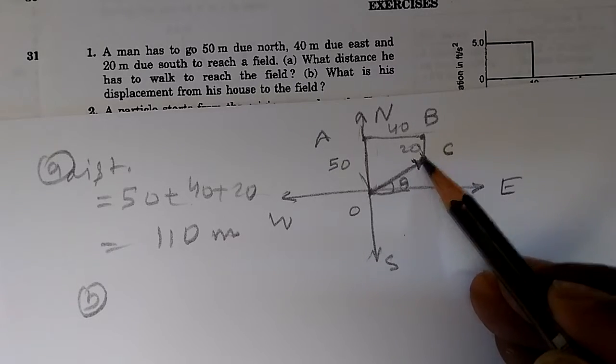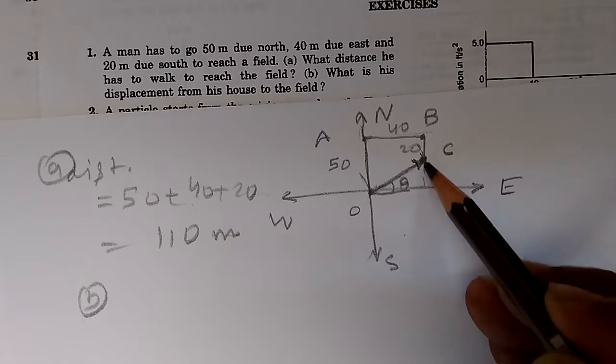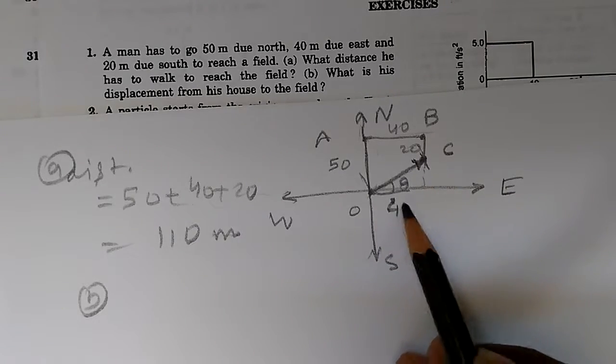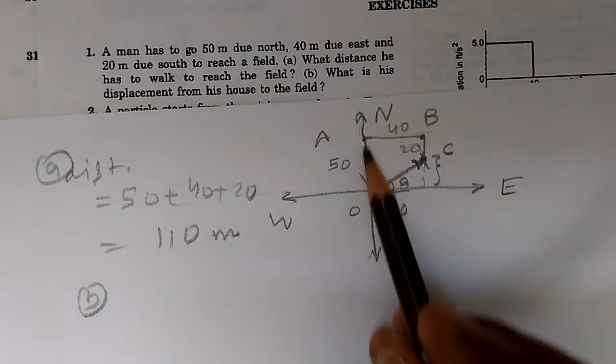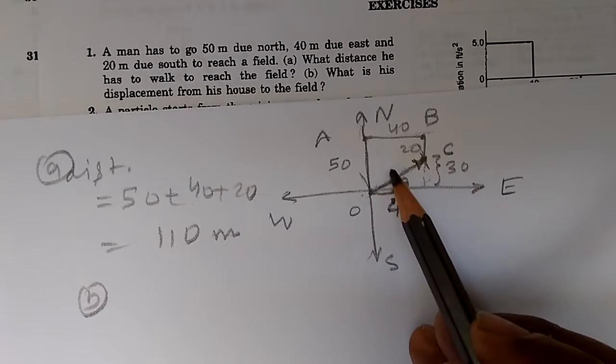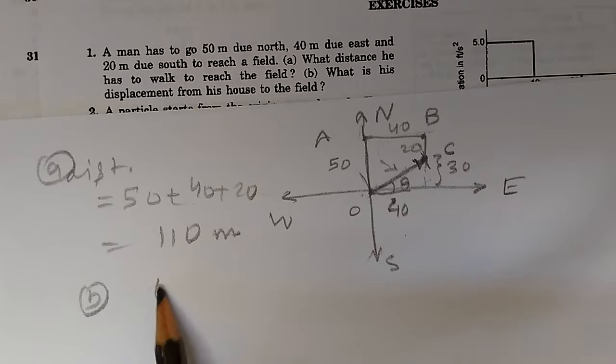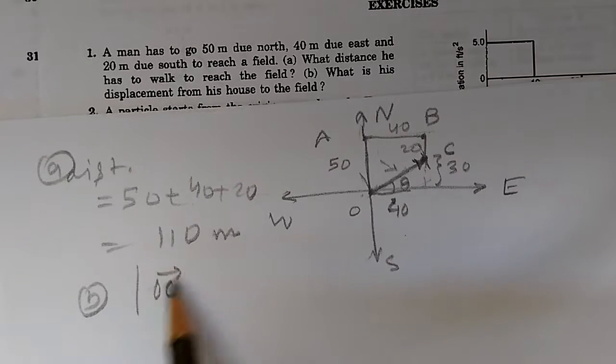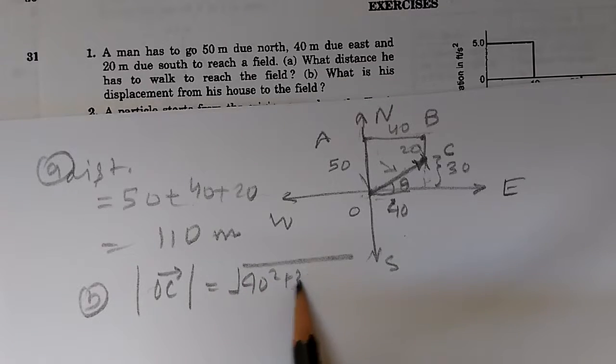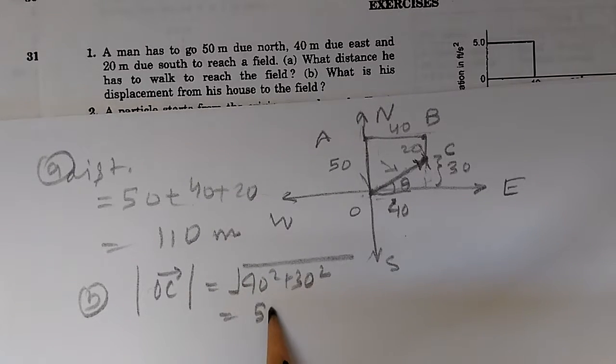So first, let's find out the magnitude of this vector, and for this we have this right angle triangle. The right angle triangle has this side as 40, and this length is 50 minus 20, which is 30. This is the right angle triangle, and this side will be OC vector. Its magnitude will be the square root of 40 squared plus 30 squared, which will be equal to 50.